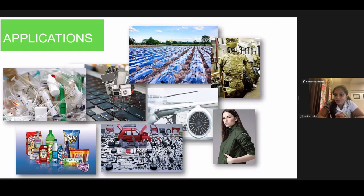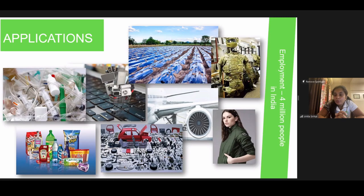And then it's followed by electronic waste, agriculture, defense, textiles, automotive, food and beverage, and specialty applications like airplanes, trains, or buses. All of these are actually made out of plastic. The application is really huge and you will be thrilled to know that about 4 million people are employed in India in the plastics industry. You can relate that it is a really important sector and its properties are so unique that it has found its way into every domain.